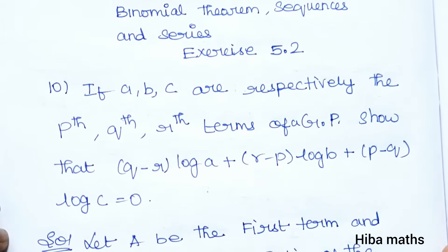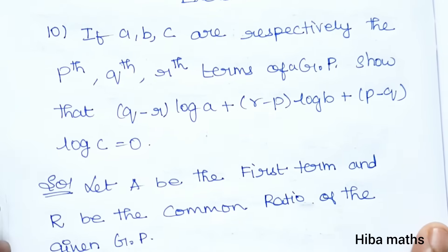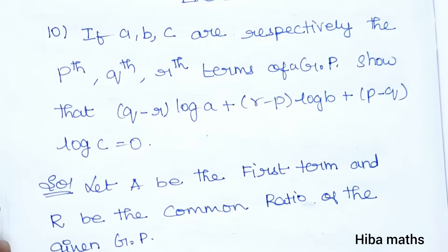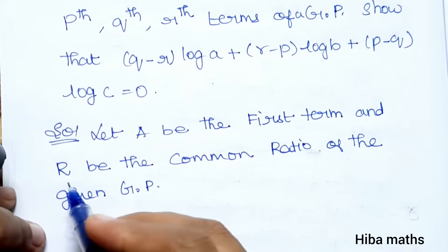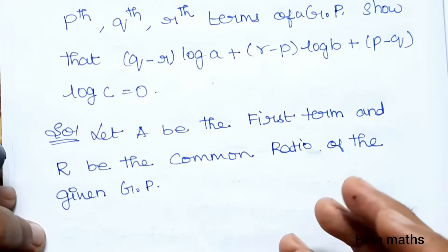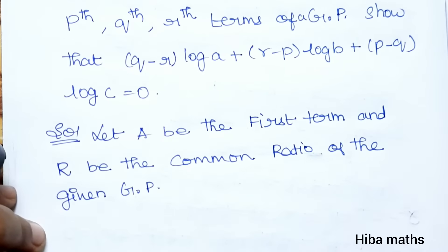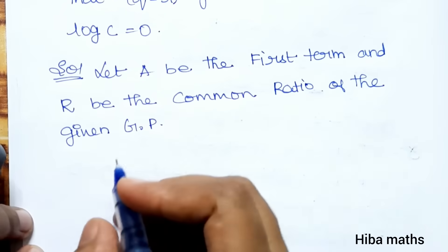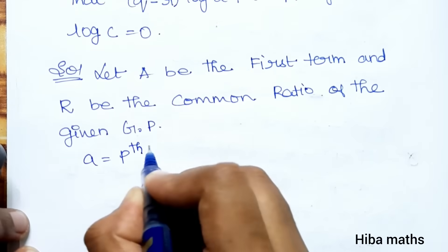To prove this, let A be the first term and R be the common ratio of the given GP. A is equal to the Pth term. Now I have three values to work with.